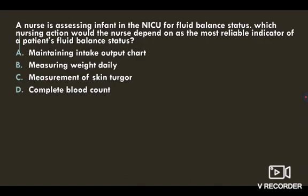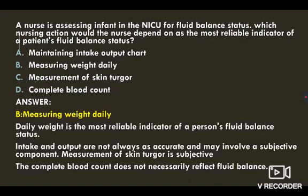Next question: a nurse is assessing an infant in the NICU for fluid balance status. Which nursing action would the nurse depend on as the most reliable indicator of a patient's fluid balance status? Options: maintaining intake-output chart, measuring weight daily, measurement of skin turgor, or complete blood count. The correct answer is measuring weight daily. Daily weight is the most reliable indicator of a person's fluid balance status. Intake and output are not always as accurate and may involve a subjective component. Measurement of skin turgor is also subjective, and the complete blood count does not necessarily reflect fluid balance.